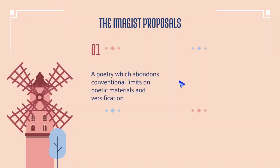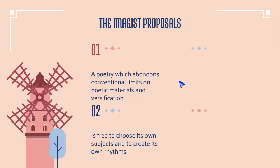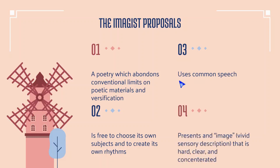The imagist proposals include: a poetry that abandons conventional limits in poetic materials and versification — almost free from literary traditions, free to choose its own subjects and create its own rhythms. Any image could be a topic; there are no suitable or unsuitable subjects. The poet can add their own rhythms regardless of traditional metric patterns, and may use common or colloquial language. The poem presents an image — vivid, sensory, hard, clear, and concentrated.